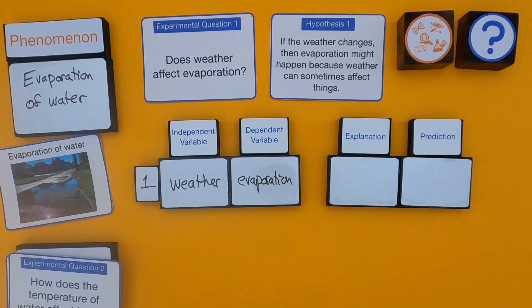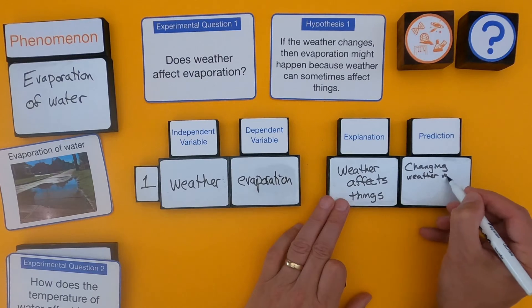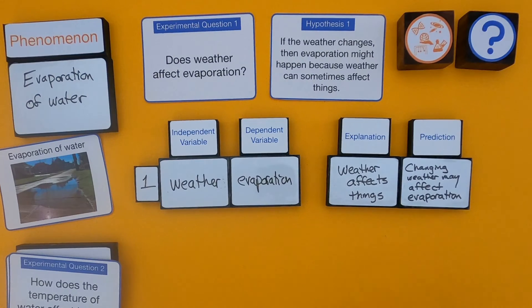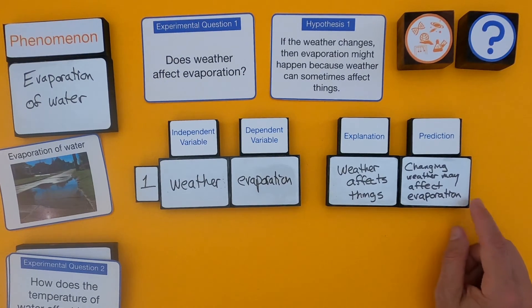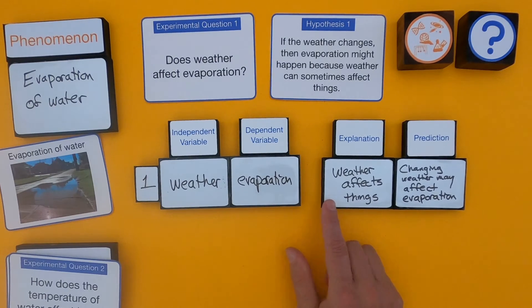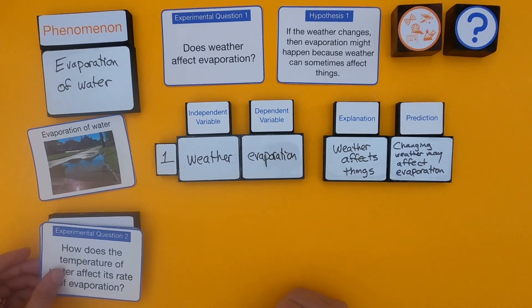When it comes to their hypothesis, the two things I'm looking for are a prediction and an explanation. They're saying that if the weather changes, evaporation might happen — so it might affect evaporation. And then their explanation is really that weather affects things. Now that I've laid out their hypothesis and experimental question, I can evaluate their question.